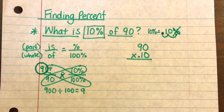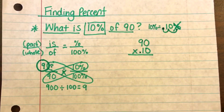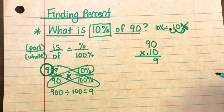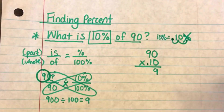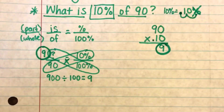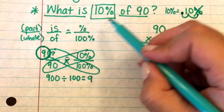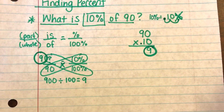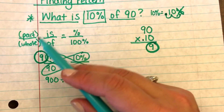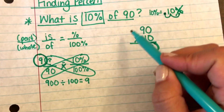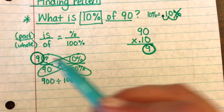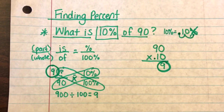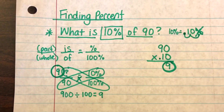If you have a calculator, you can simply put 90 times 0.10 and you'll get nine. Or you can do the extended math, but either way you're left with nine as your answer. So what is 10% of 90? The answer is nine. No matter which way you did it — using a proportion or multiplying by a decimal — you get the same exact answer of nine, which is 10% of 90.